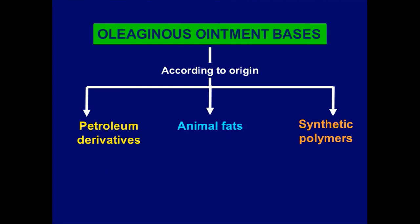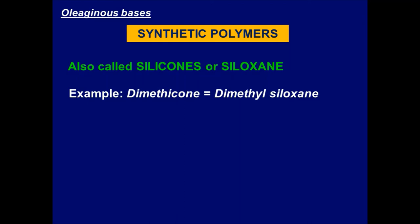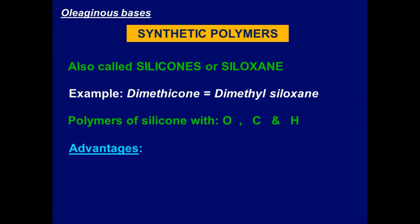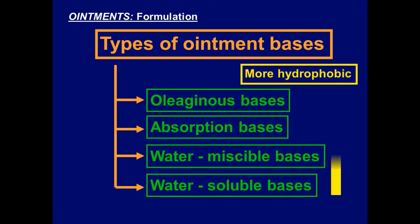Another type of oleaginous ointment bases is synthetic polymers, also called silicones or siloxanes, exemplified by dimethicone (dimethyl siloxane). They are polymers of silicon, oxygen, carbon, and hydrogen — totally synthetic. They are chemically inert, contain no water, and are not susceptible to microbial growth because they are not of natural origin.